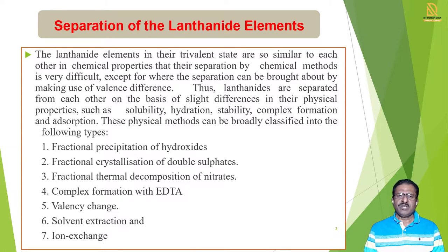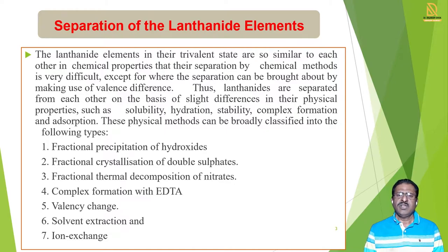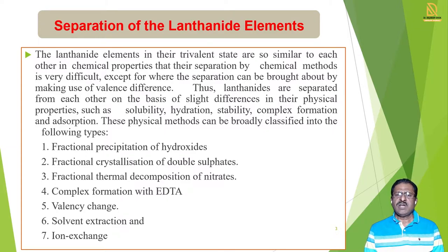All 14 elements show nearly the same chemical properties, and when chemical properties are the same, separation is difficult. In inorganic qualitative analysis, we are given different cations and anions, and we can identify and separate those ions by particular methods. We use systematic chemical tests, dividing cations into 6 groups. But in the case of lanthanides, it is very difficult because the properties of all the elements are nearly the same.